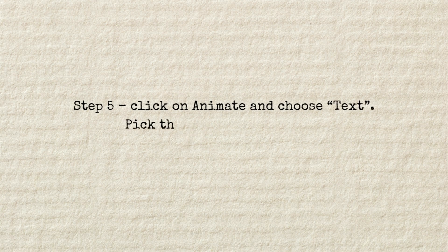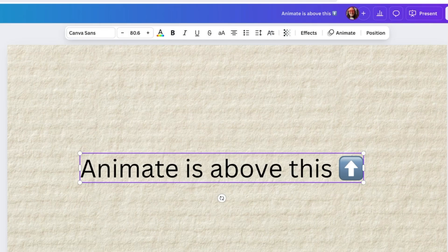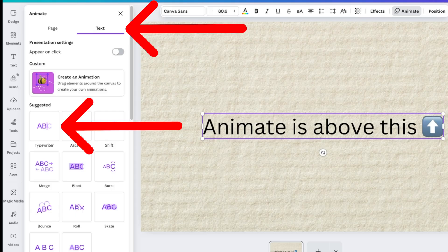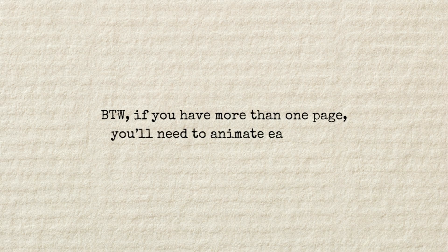Step five. Click on Animate and choose Text. Pick the animation you like. I used a typewriter effect. By the way, if you have more than one page, you'll need to animate each page.